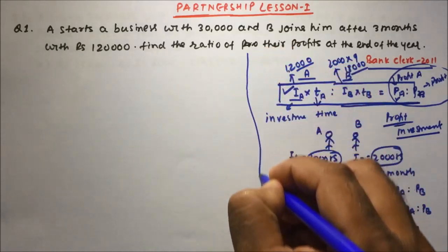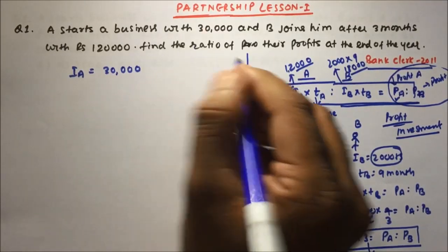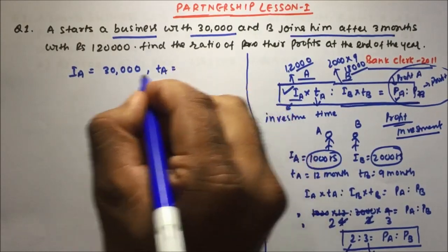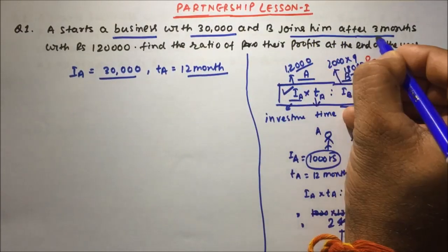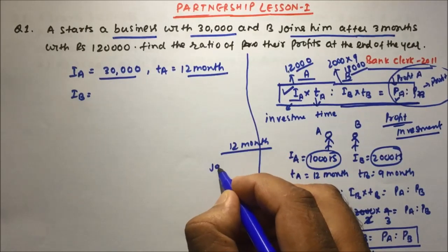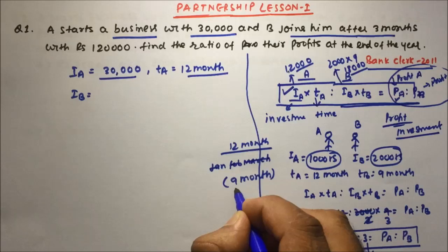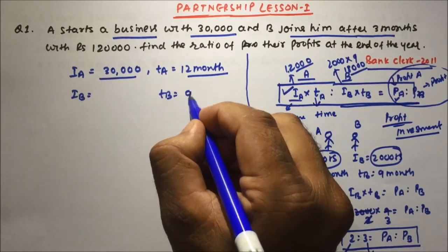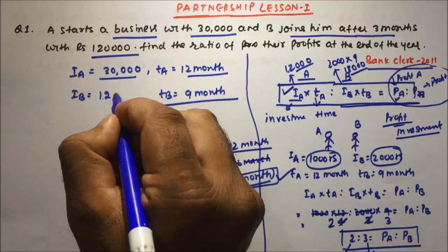Question 1: A starts a business with 30,000 rupees. B joins him after three months. Since A is starting from the beginning, A invests for 12 months. B is joining after three months — January, February, March already crossed — so B will invest for 9 months. B's investment is 1,20,000 rupees.